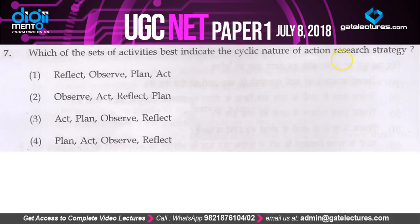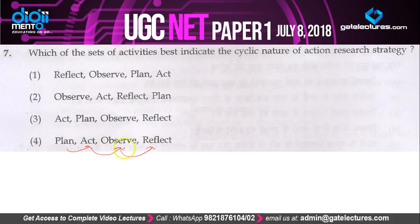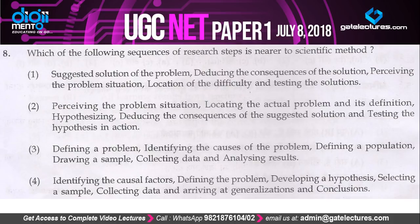Question 7: which set of activities best indicates the cyclic nature of action research strategy? You first plan, then act, then observe the result of your action, and then reflect upon the observation. So the correct order is plan, act, observe, reflect — which is option 4.